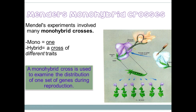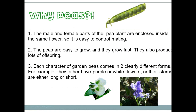When Mendel gathered his results from crossing pea plants, he looked at the following characteristics: flower color (white or purple), position on the stem (top or along the branches), seed color (yellow or green), seed shape (round or wrinkled), pod shape, pod color (yellow or green), and stem length (long or short). He looked at all of these things to determine his patterns.